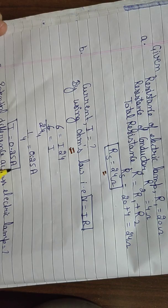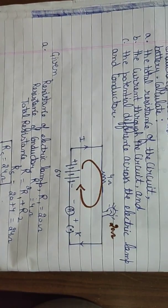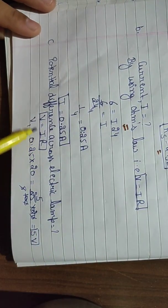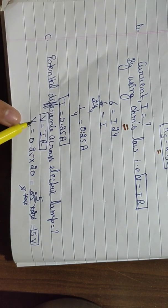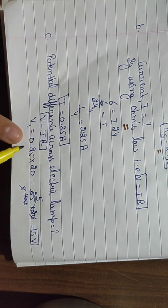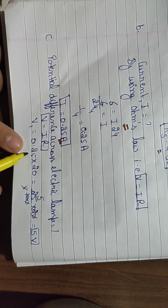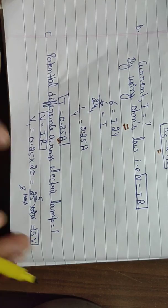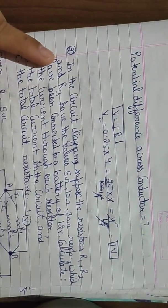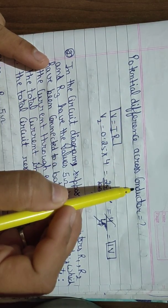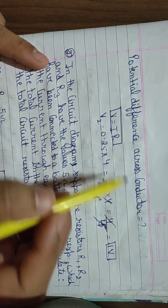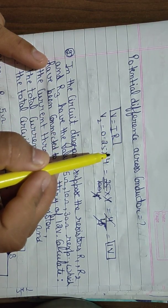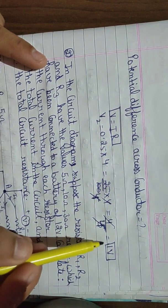Ampere is the SI unit of current. Now for the third part: potential difference across the electric lamp. Again using Ohm's law V = IR, potential difference across the lamp V1 = I × R1 = 0.25 × 20 = 5 volt. Further, there is one more part — potential difference across the conductor: V2 = I × R2 = 0.25 × 4 = 1 volt.